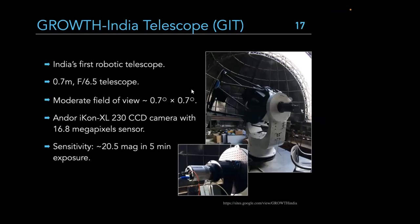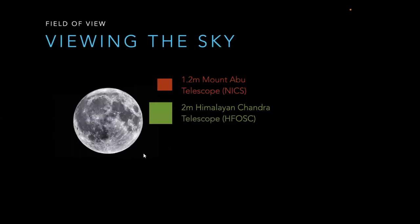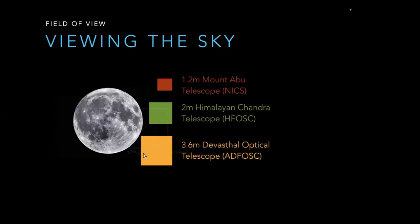This is the GROWTH-India Telescope (GIT): a 0.7-meter telescope located in the cold desert of Hanle, Ladakh — a very beautiful place. It is India's first robotic telescope, supported by a camera with a 0.7 by 0.7 degree field of view, reaching about 20.5 magnitudes in five minutes. Stacking images over longer exposures can reach up to 23 magnitudes.